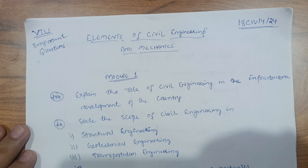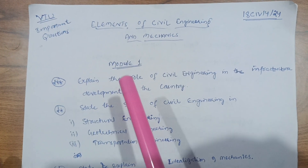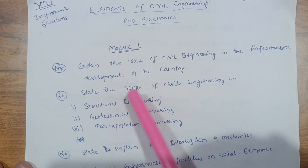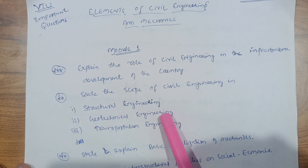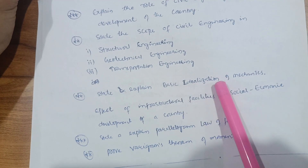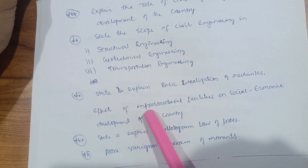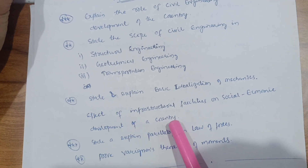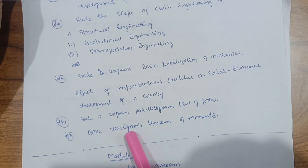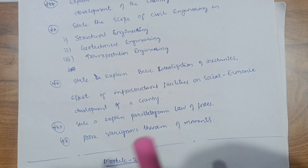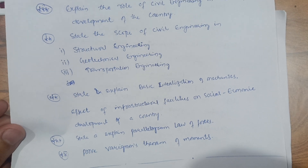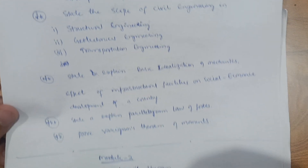In Module 1, you have to cover all theory. The most probable questions are: explain the role of civil engineering in the infrastructure development of the country, state the scope of civil engineering in structural engineering, geotechnical engineering, and transportation engineering, state and explain basic idealization of mechanics, effect of infrastructural facilities on socio-economic development of a country, and state and explain parallelogram law of forces and prove Varignon's theorem of moments. Focusing on this content, you can easily score at least 20 marks in Module 1.